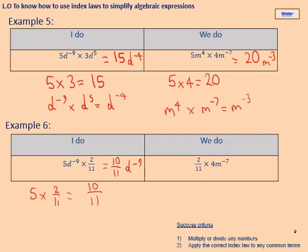For the 'We do': 2 over 11 times 4 — multiply the numbers first: 4 times 2 gives 8 in the numerator, keep the denominator the same, which is 11. In terms of algebraic terms we only have m to the power negative 7, so we keep that the same. Answer: 8 over 11 m to the power negative 7. Pause the video, check your answer, and if you've been following along you're doing really well.